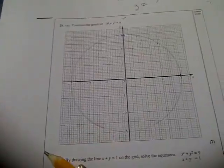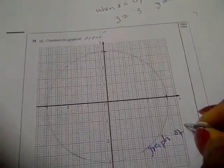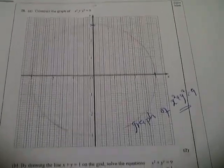So now this is the graph of x squared plus y squared equal to 9. So that's it for question 3. Thank you.